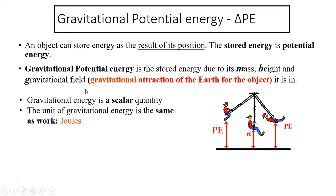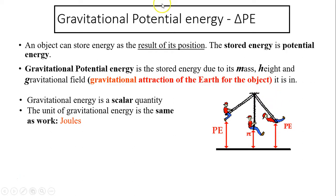Now let's talk about gravitational potential energy, denoted by the symbol ΔPE. An object can store energy as a result of its position — this stored energy is called potential energy. Gravitational potential energy is stored energy due to an object's mass, its height, and the gravitational field. It only exists because of the gravitational attraction of the Earth for the object. Gravitational potential energy is a scalar quantity with units of joules.